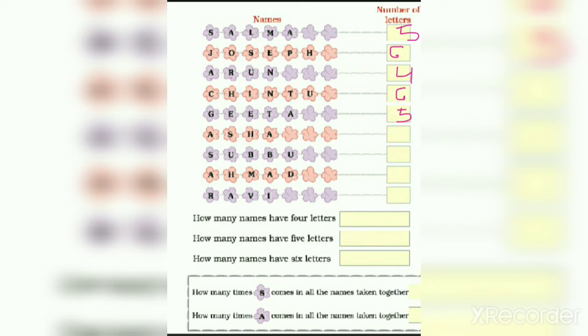Next, A, S, H, A. Here we have 4 letters. S, U, B, B, U. Here we have 1, 2, 3, 4, 5 letters.